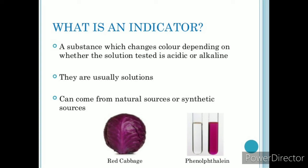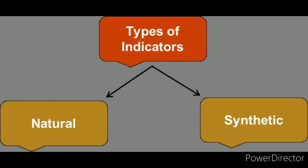There are two types of indicators: naturally occurring indicators and synthetic indicators. Examples of naturally occurring indicators are turmeric, litmus, china rose, and red cabbage juice. Examples of synthetic or commercial indicators are phenolphthalein, litmus paper, and methyl orange.